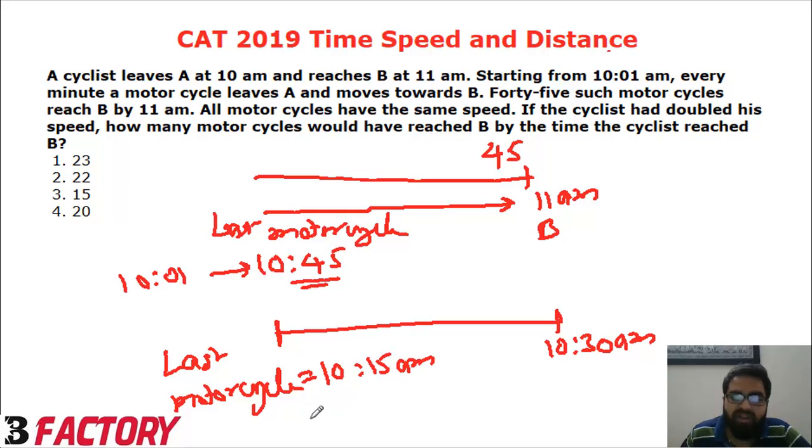So, the first bike is starting at 10:01, the last is at 10:15. That means 15 bikes would have reached B by the time the cyclist reached B. I hope the concept is clear. Thank you very much.